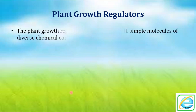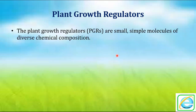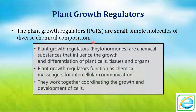What are plant growth regulators? Plant growth regulators are chemicals — small simple molecules of diverse chemical composition. These phytohormones are chemical substances that influence the growth and differentiation of plant cells, tissues, and organs. The changes that occur in cells, tissues, and organs are due to plant growth regulators.